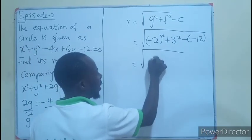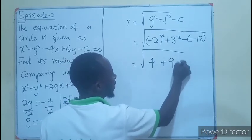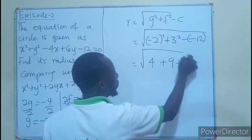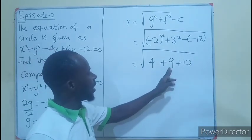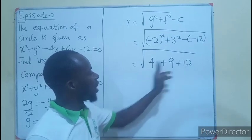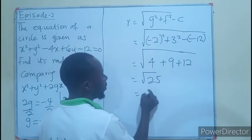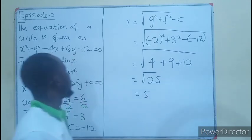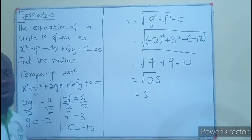This will give us 4, this will give us 9, and this will give us plus 12 since the negative cancels. So we have 25. Therefore, the radius of the circle is 5.